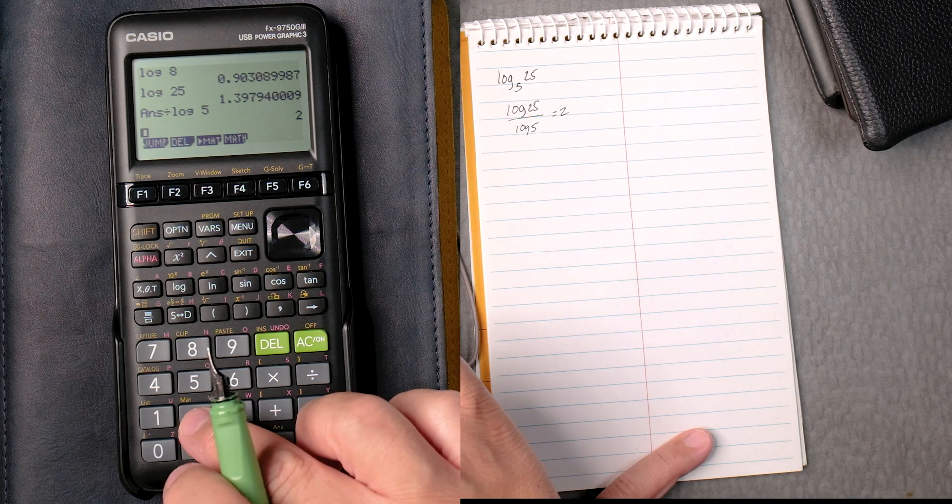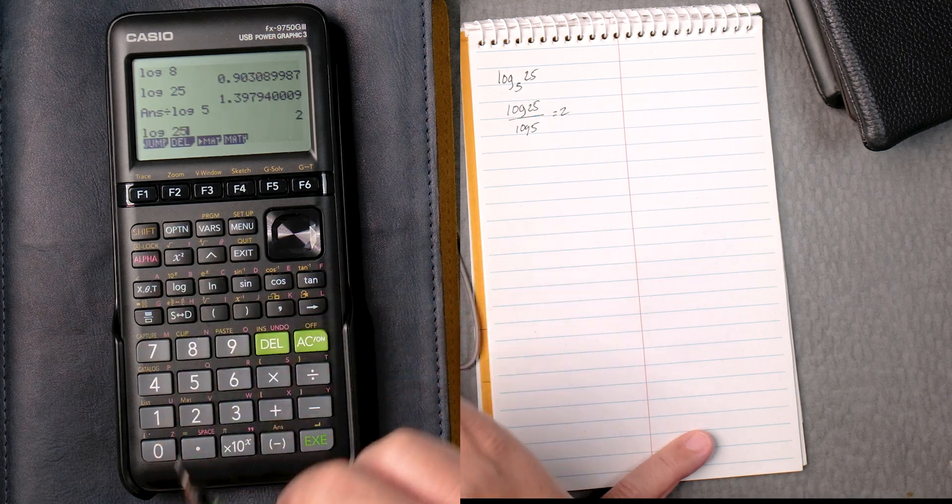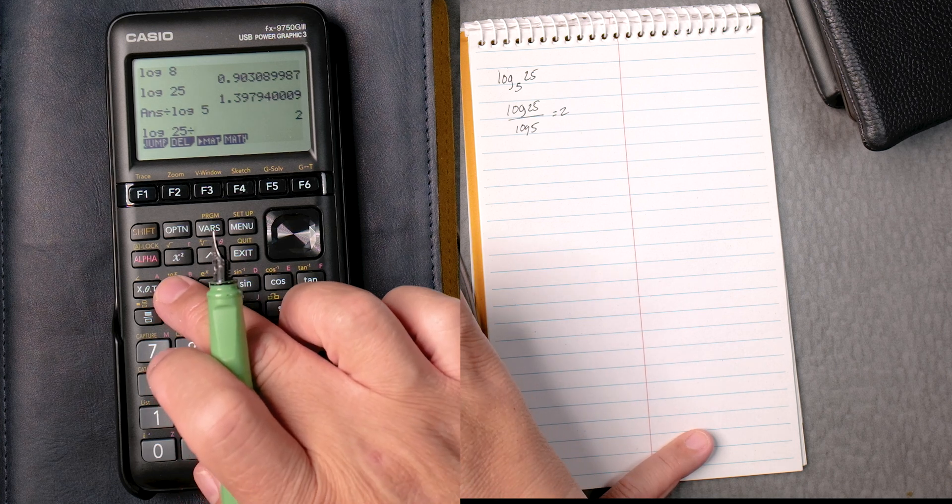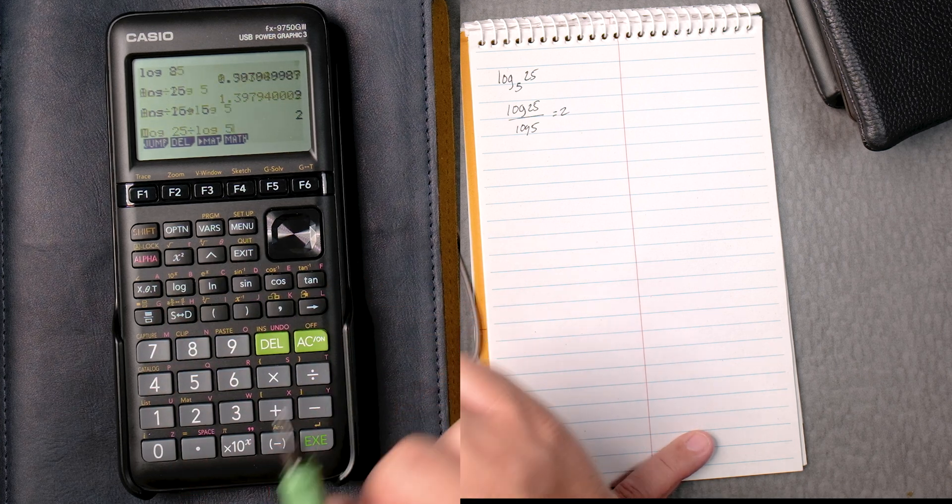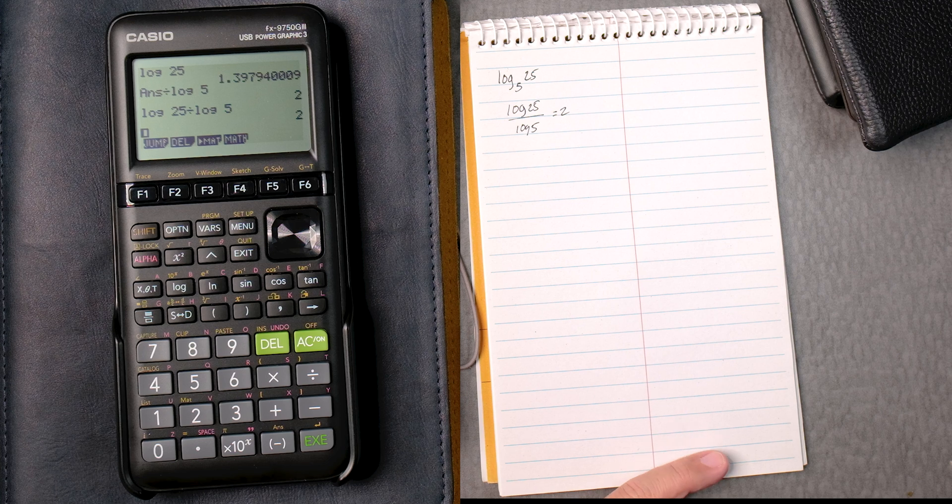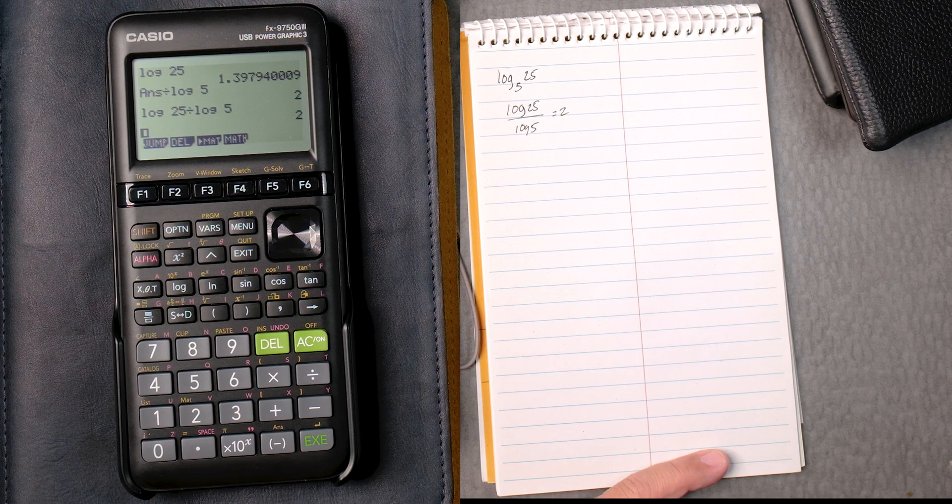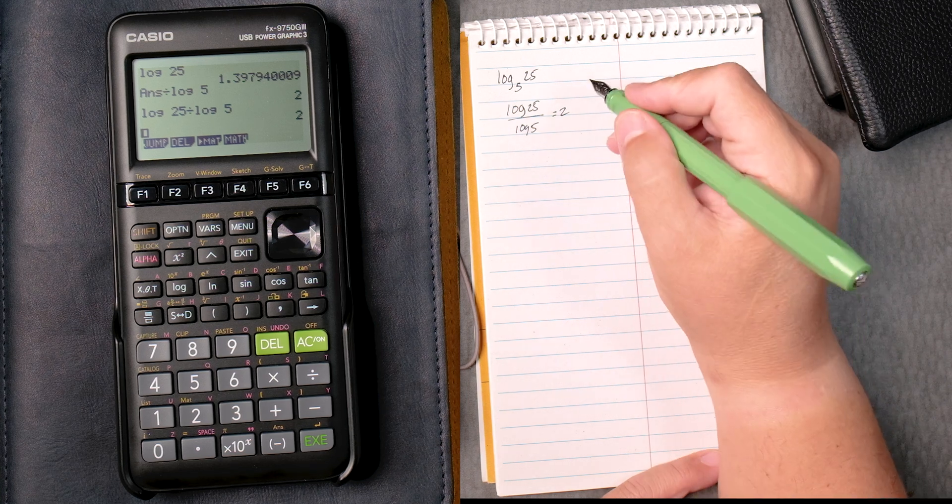Let's see if I said log 25 and then divide by log 5. I don't think it would work. Oh, it did. Okay, it was smart enough to separate them. All right, now we know.